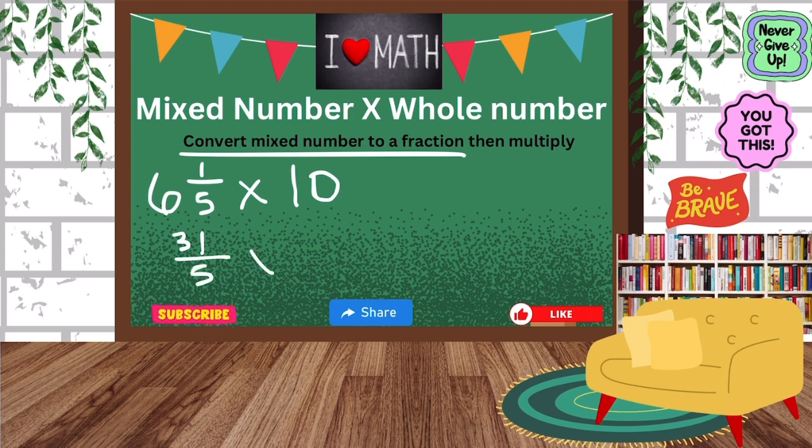We're going to multiply it by 10, turn that 10 into a fraction by adding a 1 underneath it and then you multiply across. 31 times 10 is 310 and then 5 times 1 is 5. Then we say, this is an improper fraction. How many wholes can I get from out of there? And I can get 62 wholes from out of there.